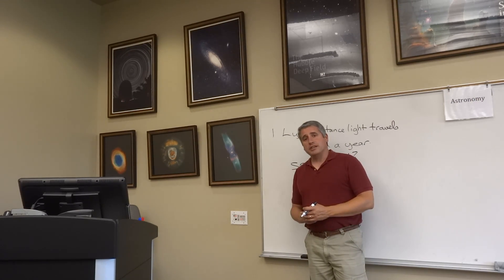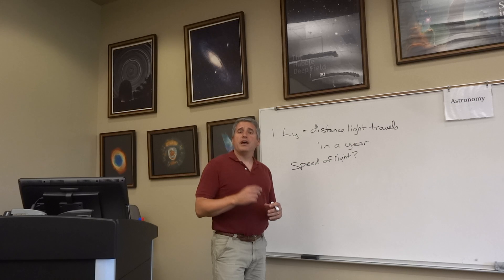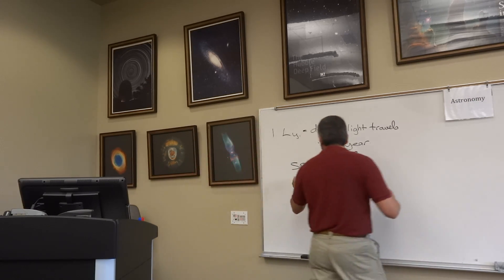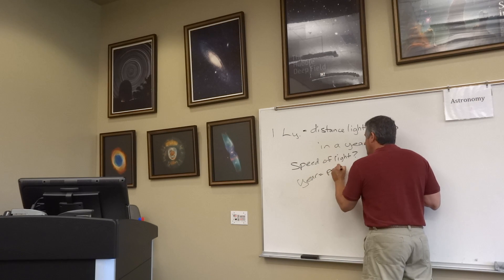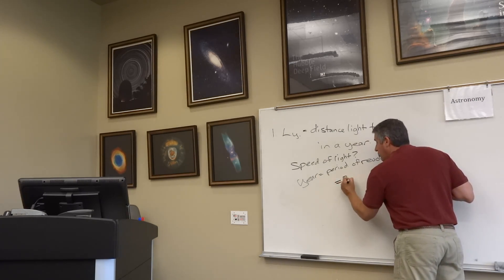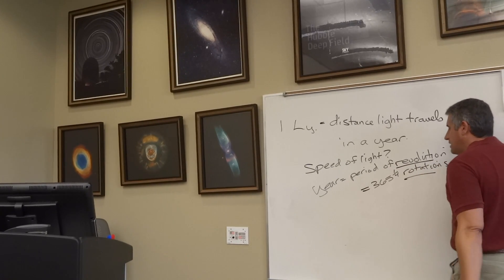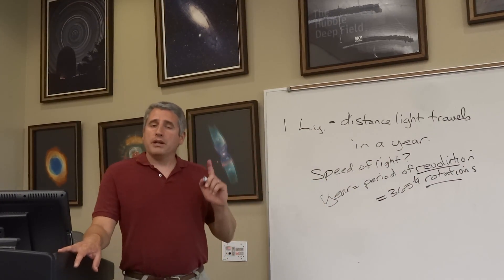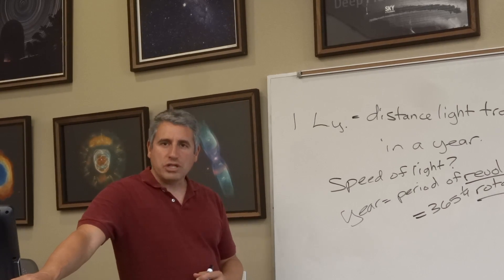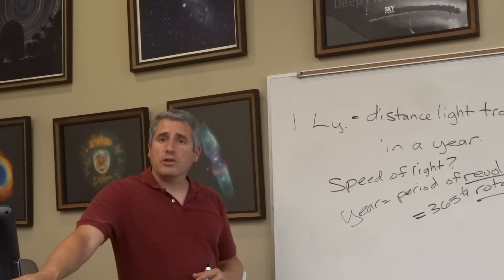The second piece is: what's a year? It takes the Earth about 365 and a quarter days to complete one yearly revolution around the sun. So a year is the Earth's period of revolution around the sun, equal to 365 and a quarter rotations on its axis. There is an important distinction: the Earth revolves around the sun, but it rotates on its axis. One year is the period of Earth's revolution around the sun — 365 and a quarter rotations on its axis as it goes around the sun. In our next segment, we'll talk about the speed of light.